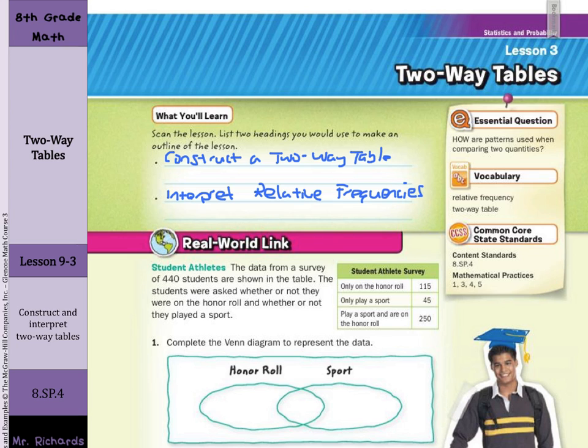Our real-world link deals with student-athletes. The data from a survey of 440 student-athletes are shown in the table. The students were asked whether or not they were on the honor roll and whether or not they played a sport.